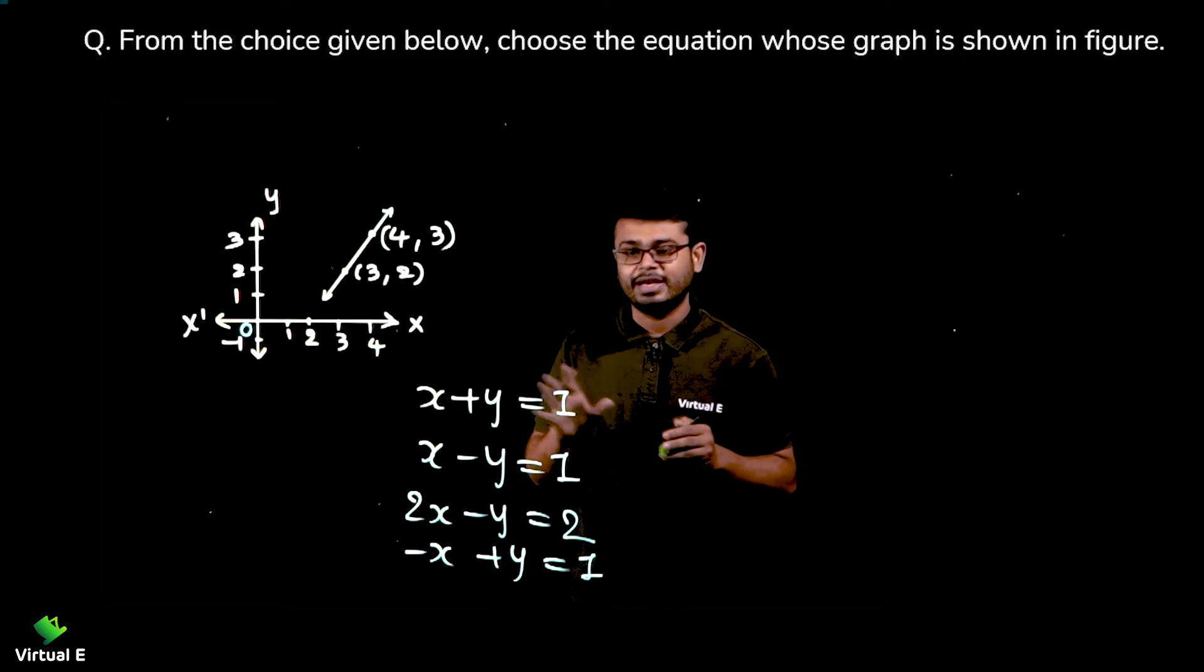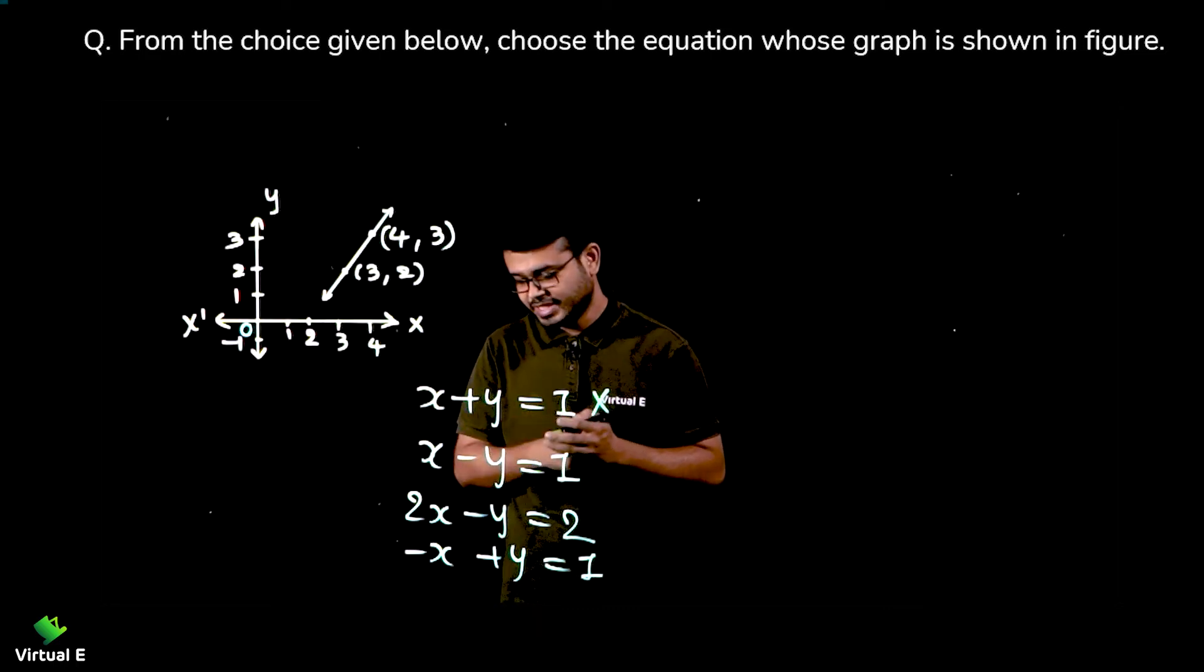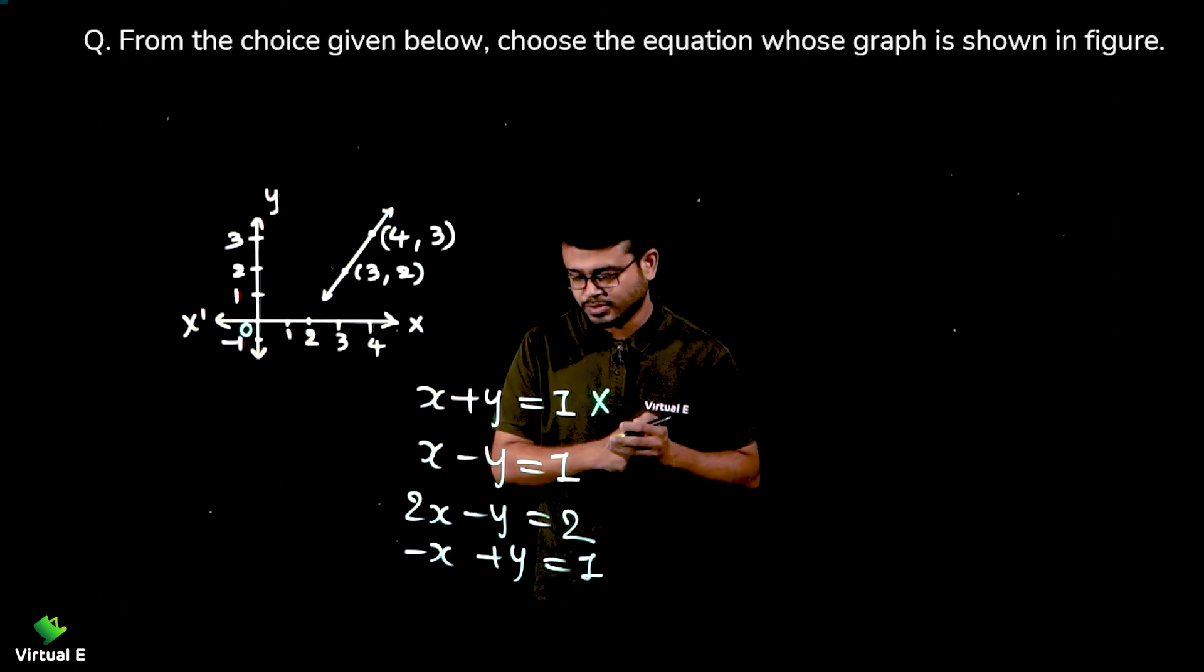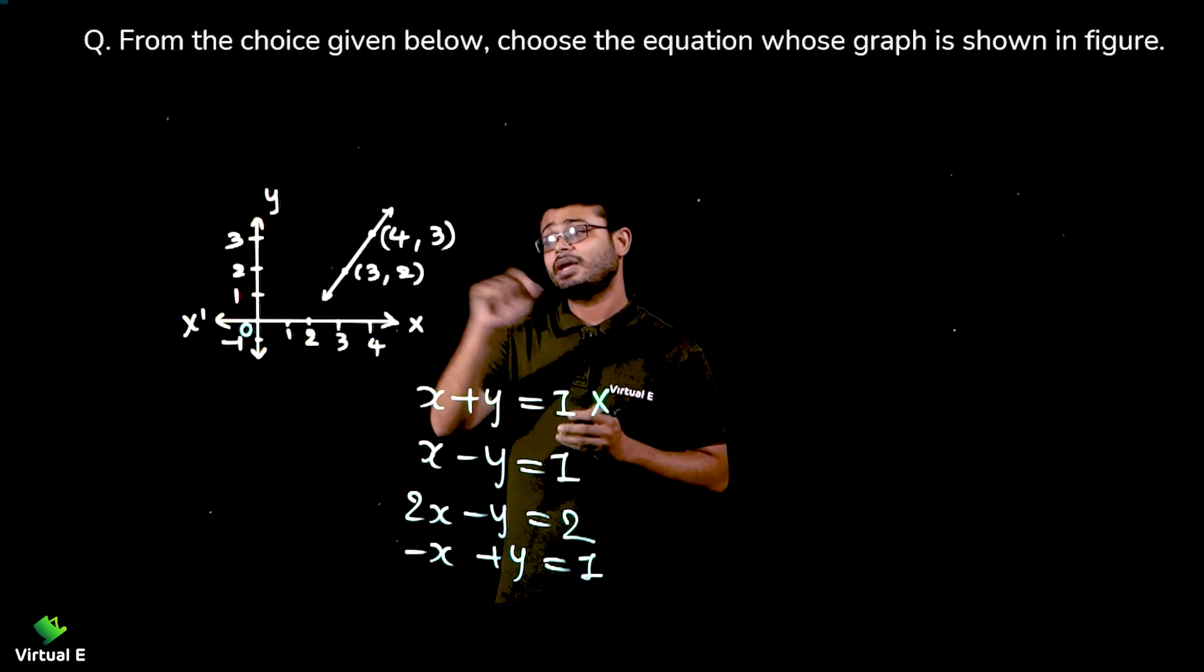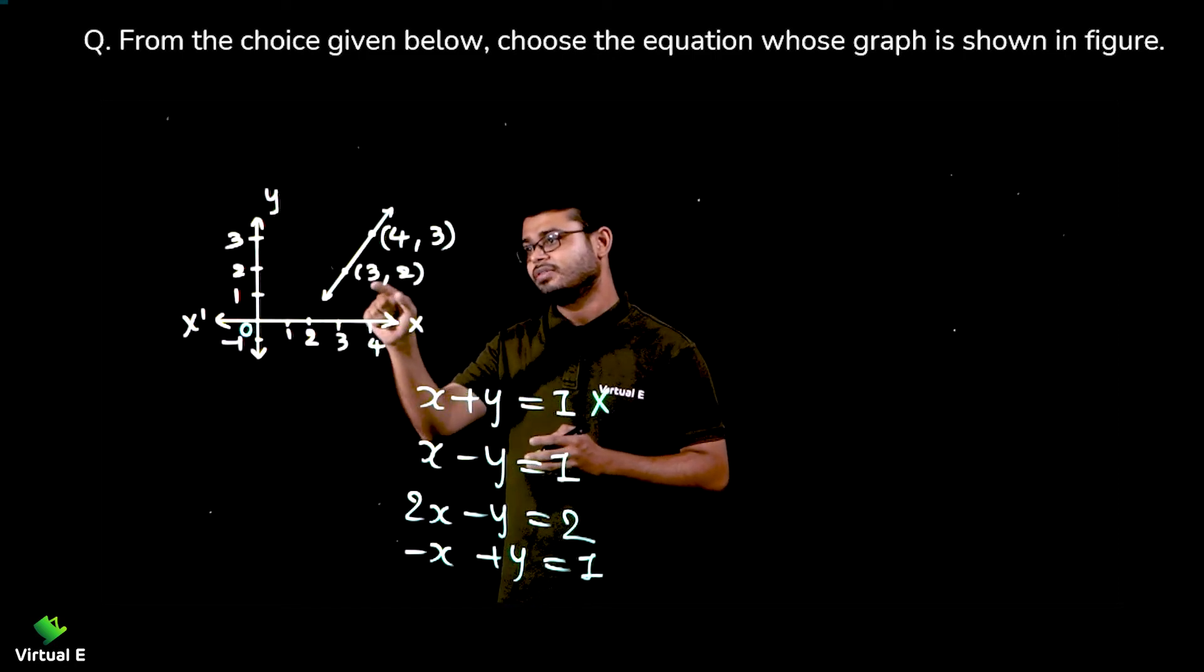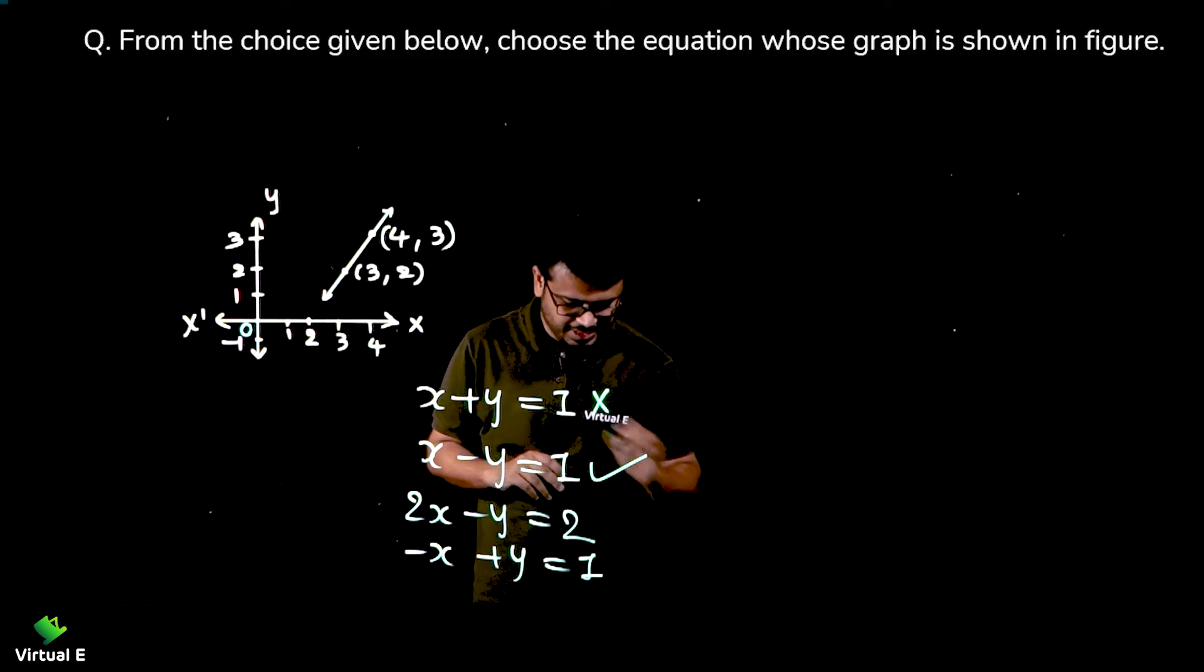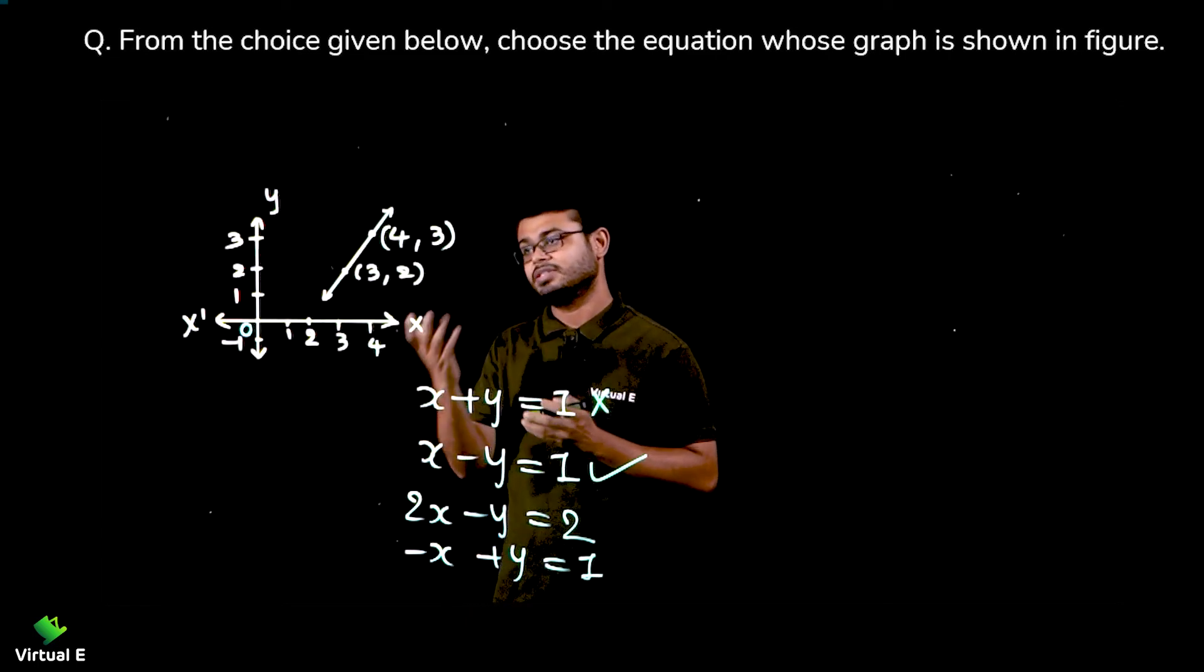Then let's move the second one: x minus y is equal to one. Okay, four minus three is also one. Okay interesting, here also one. Let's check: three minus two is also one, right. So this might be the answer, right. Four minus three.